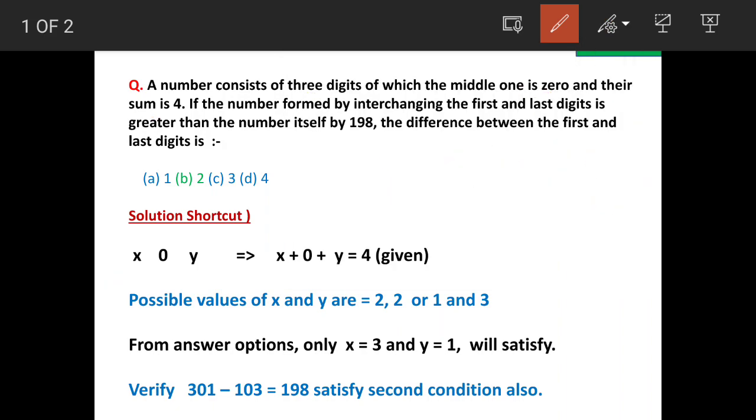So we will see the solution. We will see a shortcut method first and then we will see the detailed solution. So this I already told you. Let's suppose the number is x, 0, y. So when we add it becomes 4. Sum of the digits is 4.